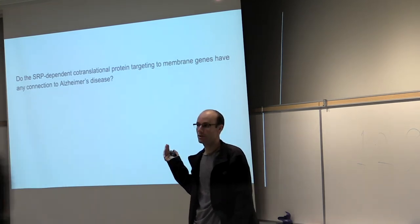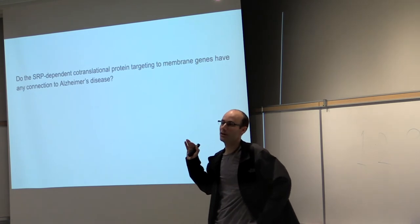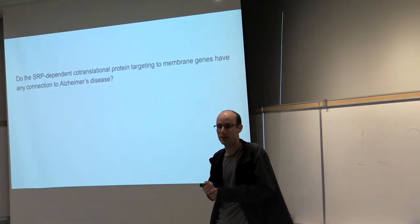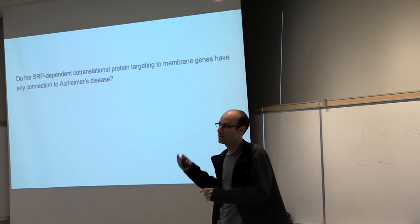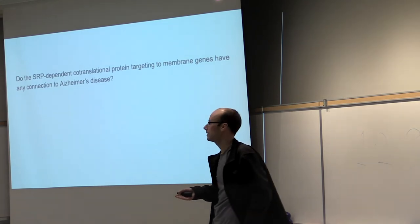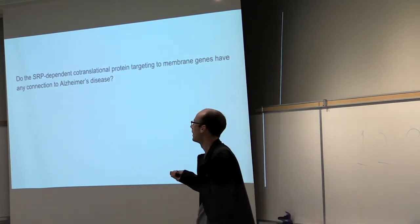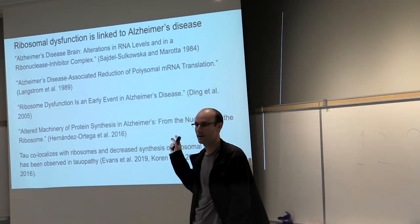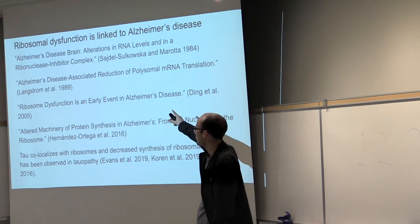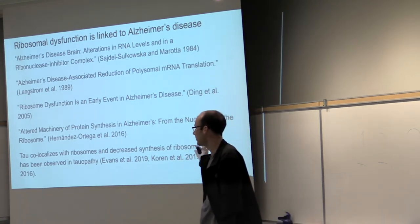We wondered: do these genes have any connection to Alzheimer's disease? I had this top GO group come up a while ago with undergraduate students Alana and Joelle working on it. They found this GO group, and it comes up on top when you do all six brains together. I went back and did each brain individually to see it was just one brain driving it. For a while I didn't see a connection until I started looking at newer hypotheses. There is some connection: ribosomes are linked to Alzheimer's disease. There are papers on ribosome dysfunction as an early event, and tau co-localizes with ribosomes.